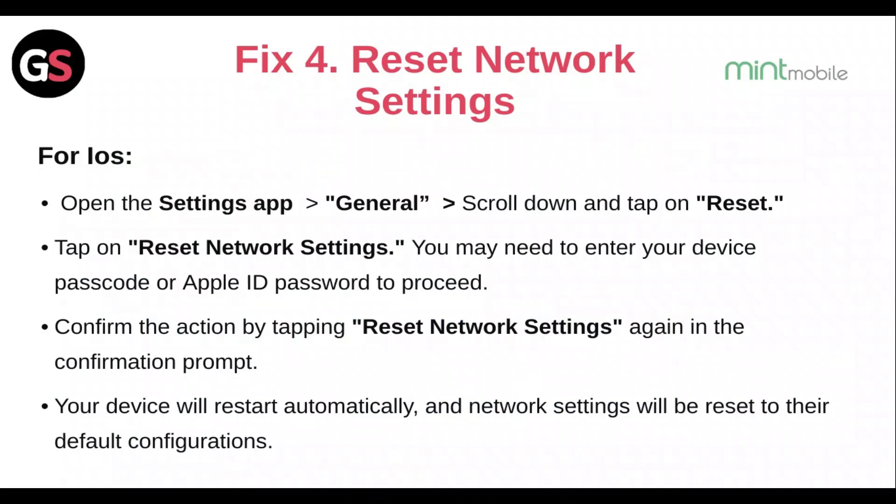Fix 4: Reset network settings. For iOS, open the Settings app, then General, then scroll down and tap Reset. Tap Reset Network Settings. You may need to enter your device password or Apple ID password to proceed. Confirm by tapping Reset Network Settings again in the confirmation prompt. Your device will restart automatically and network settings will be reset to their default configurations.